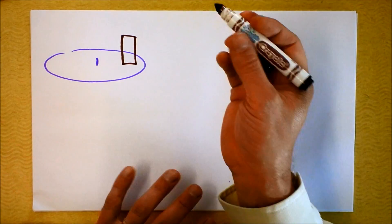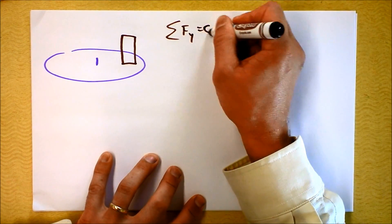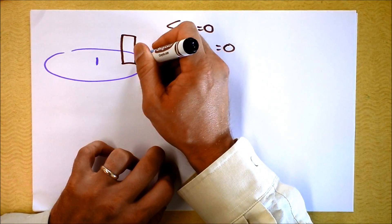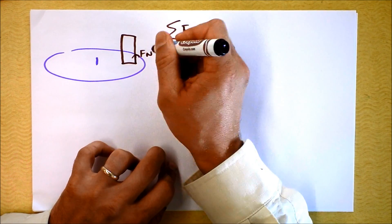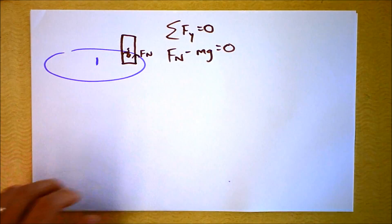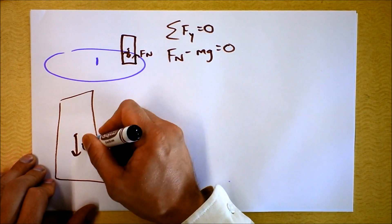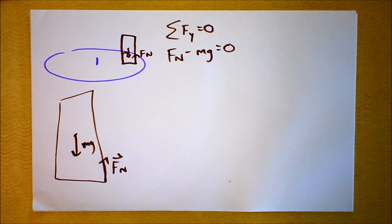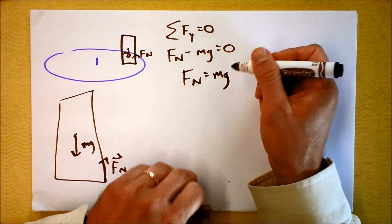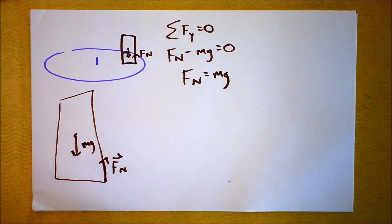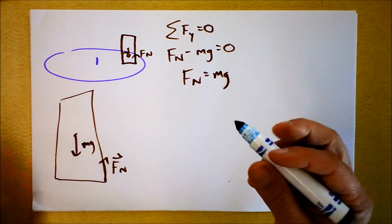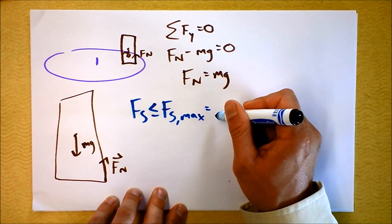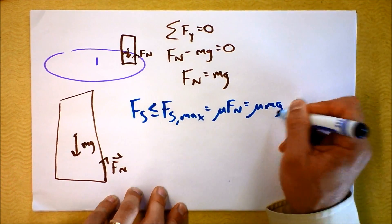If it's rotating, then we know some things. We know that the net force in the y-direction is zero, and that gives us that the normal force minus mg equals zero. The normal force is going to have shifted over to one side, so Fn is up and mg is down — same magnitude. Fn equals mg. And there's going to be a static force of friction, which could be up to some maximum value: Fs max equals mu times Fn, which is mu times mg.